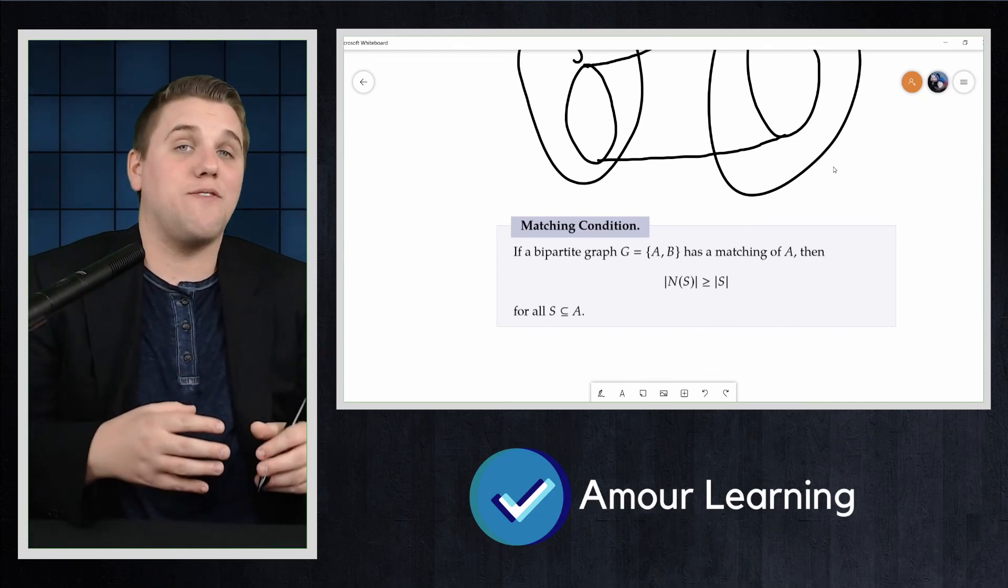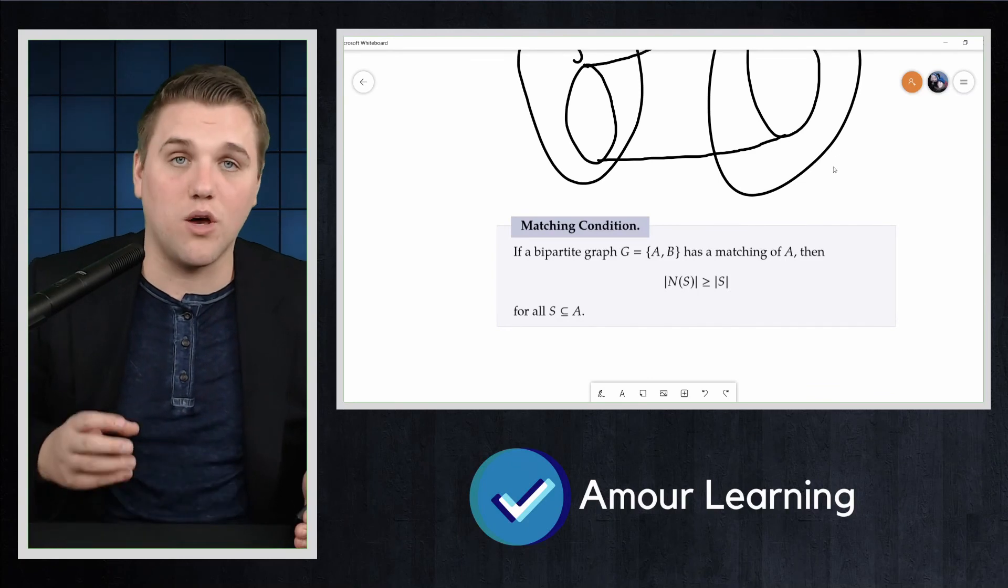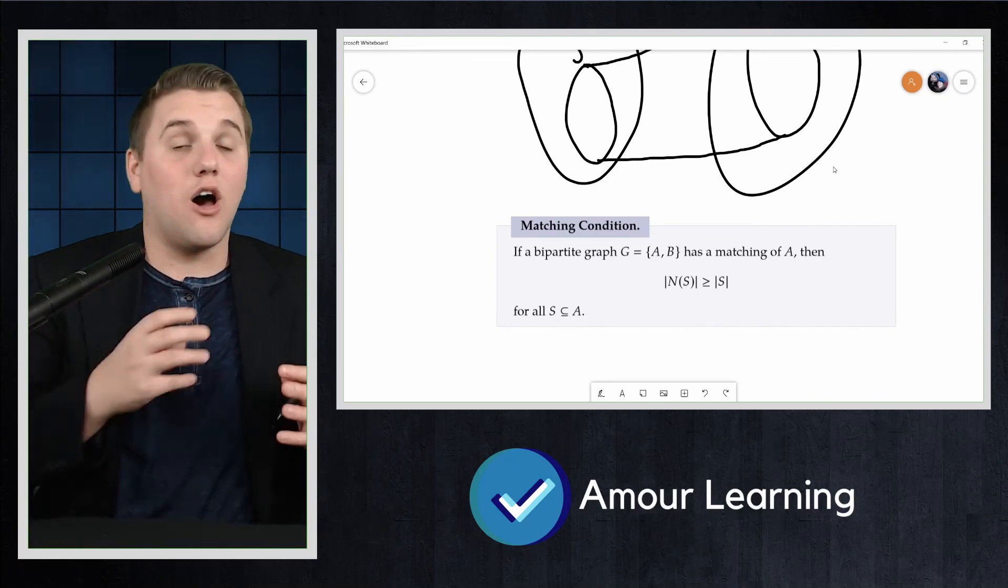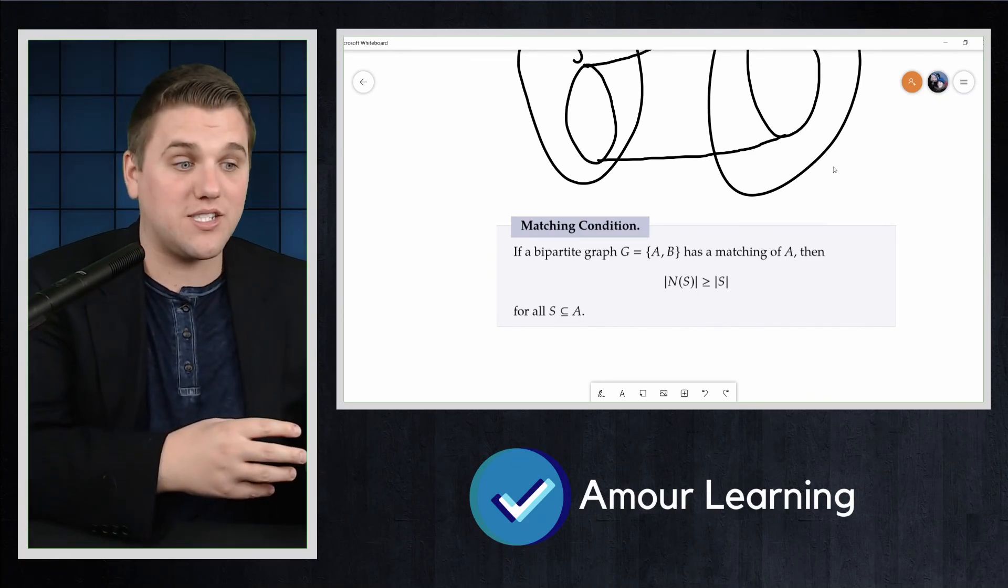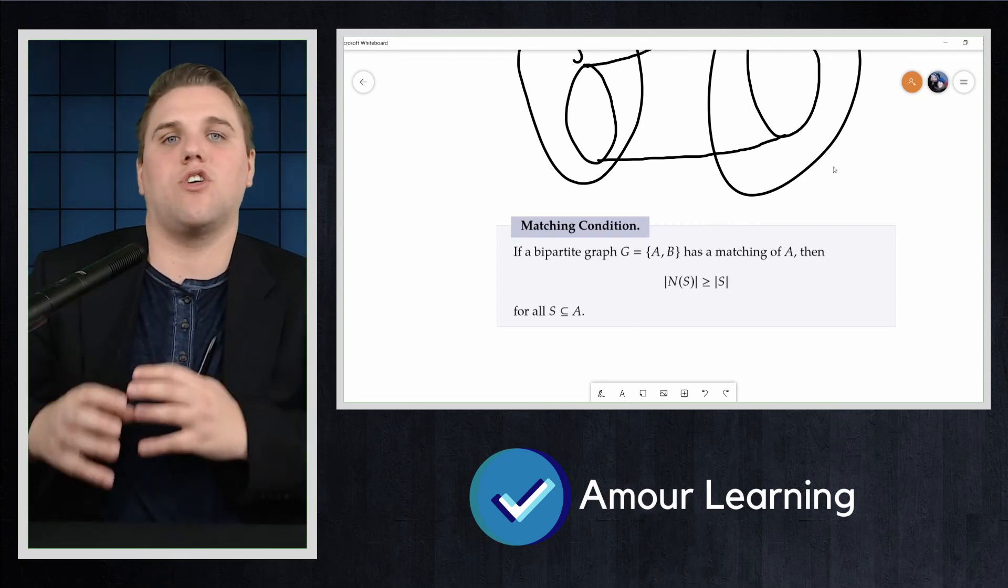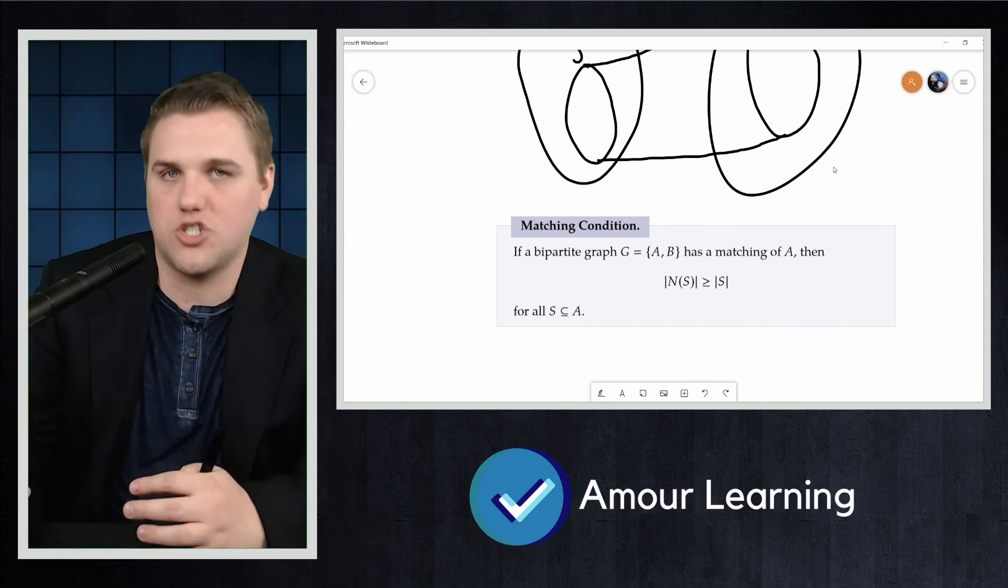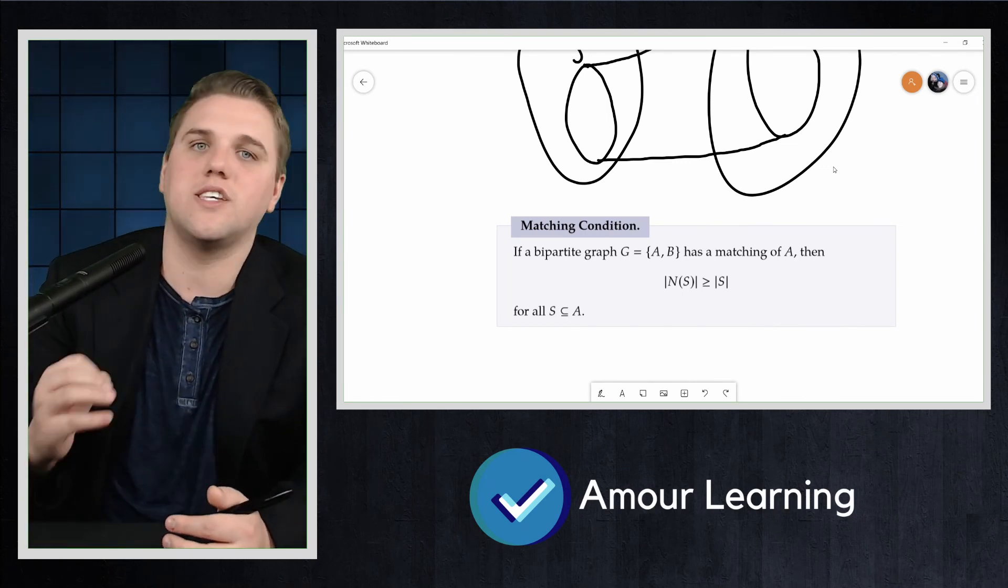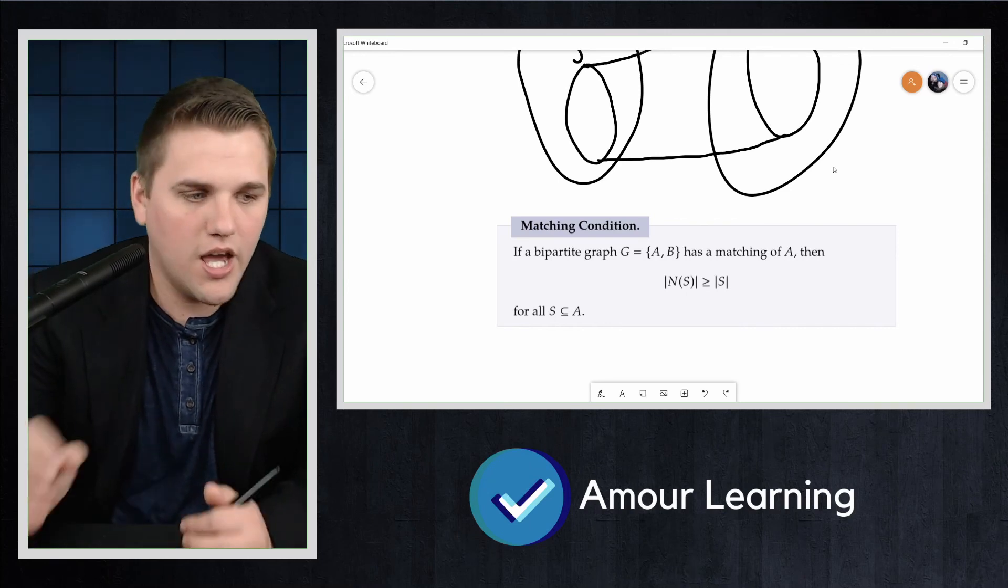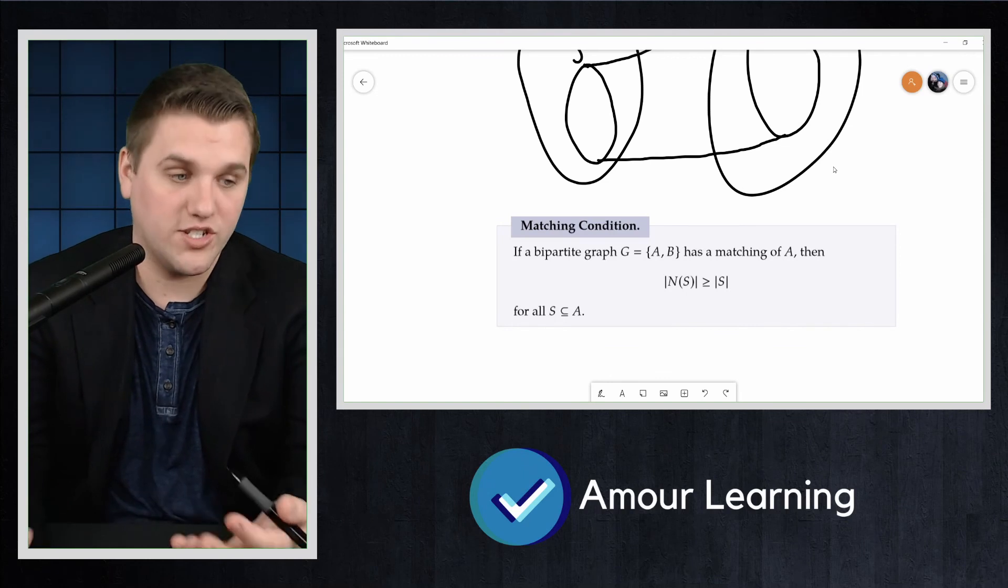And so again, that means that if you pick any group of students and look at all the topics that those students picked, there better be more topics than students, or at least as many topics as there are students. If there are less topics than there are students, then there's going to be a student, at least one student, who doesn't get one of their topics picked. And so that's what this result suggests or says.